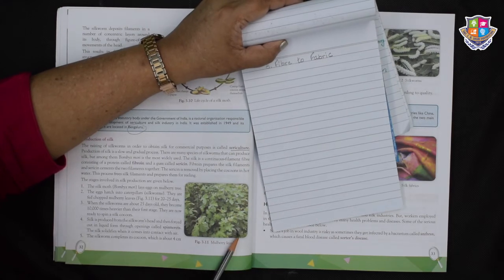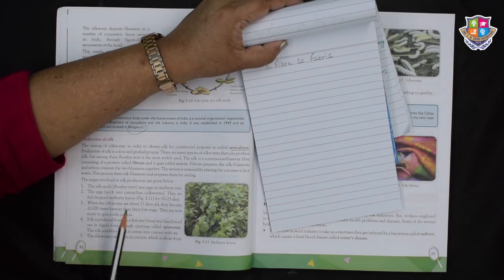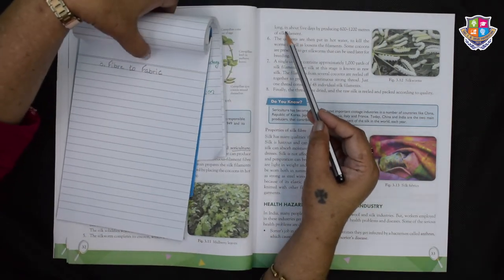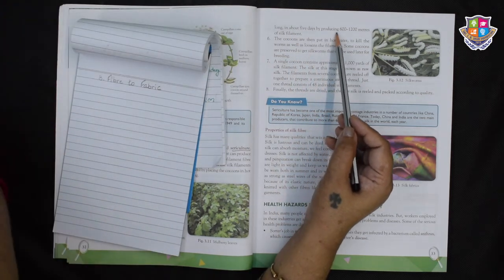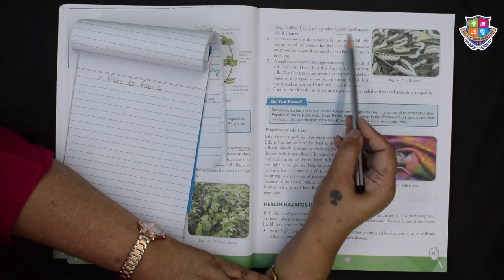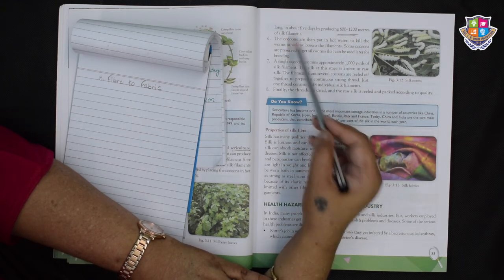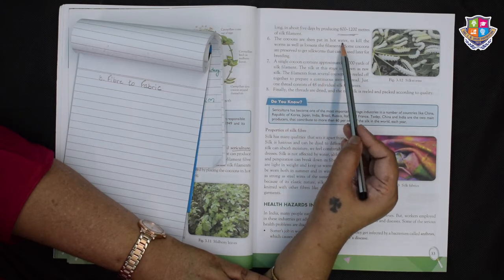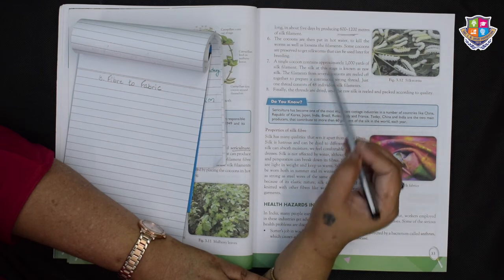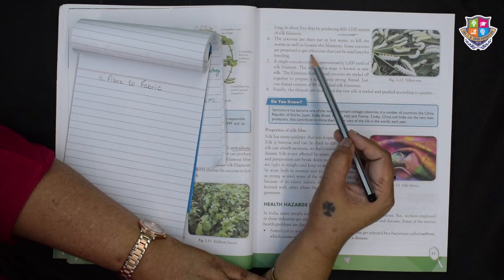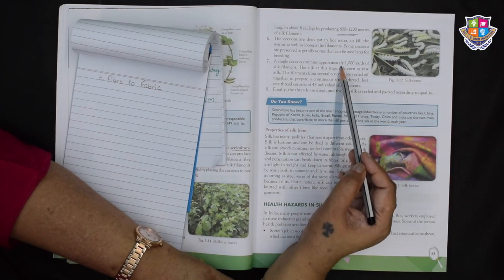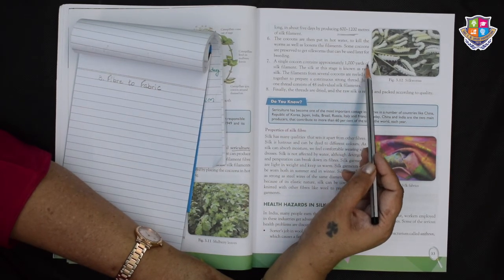These are the mulberry leaves which are chopped and given to the silkworms. The silkworm completes its cocoon which is about 4 cm long in about 5 days by producing 600 to 1200 meters of silk filament. Can you imagine this many meters of silk filament? The cocoons are then put in hot water to kill the worms as well as loosen the filaments. Some cocoons are preserved to get silkworms that can be used later for breeding.